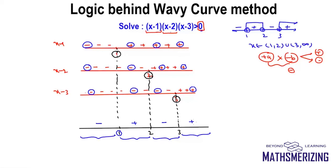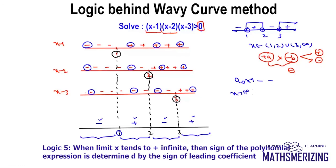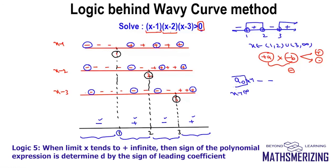Why do I start with the sign of the rightmost? For any polynomial expression, when x tends to infinity, the sign of the expression depends on the sign of the leading coefficient. That is the only reason I start with the rightmost and take its sign as the sign of the leading coefficient.